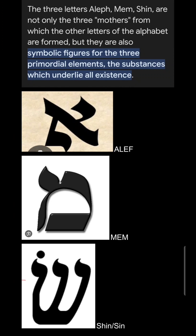Take a look at the Aleph — it looks sort of like an N. The Mem looks sort of like an O, and the Shin or Sin, depending on how you use it in Hebrew, looks like a W. So we have A, M, and S — Aleph, Mem, Shin — S, A, M. Sam.